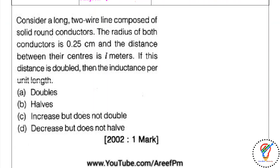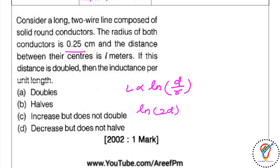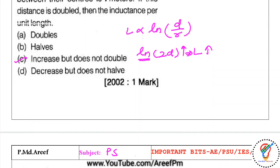Next question: consider a long two-wire line with solid round conductors of radius 0.25 cm. The distance between centers is d meters. If the distance is doubled, what happens to inductance per unit length? Since L ∝ ln(d/r), doubling d gives ln(2d/r), which is larger. So inductance increases, but does not double because of the logarithmic relationship. The right option is 'increases but does not double.' This was Gate 2012, one mark.